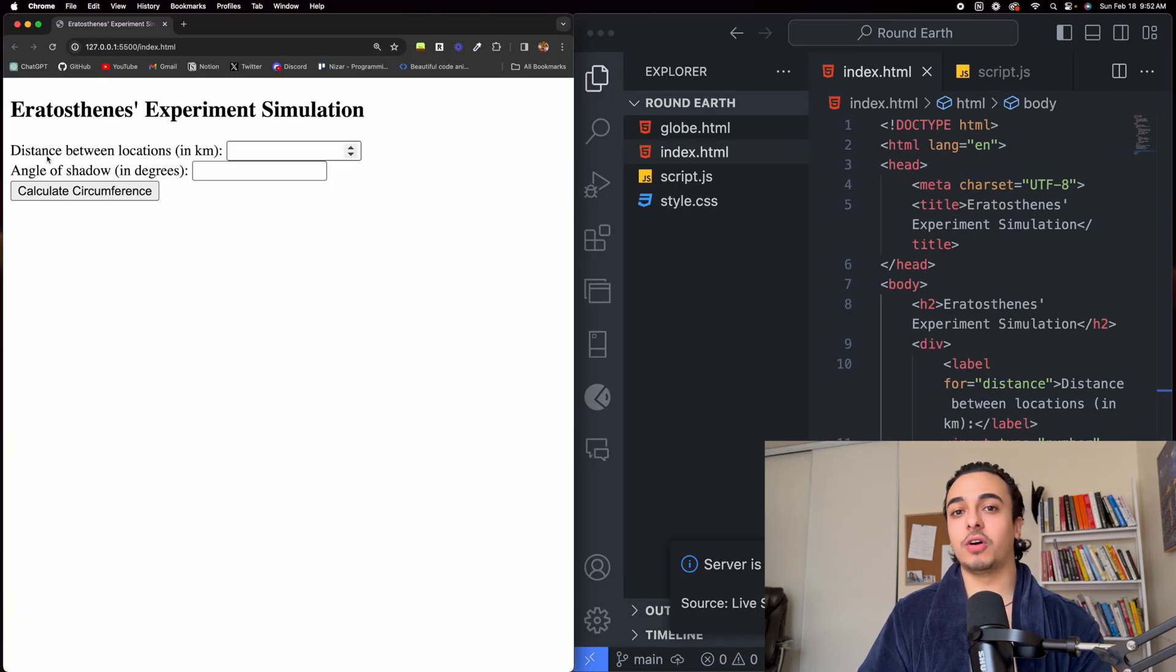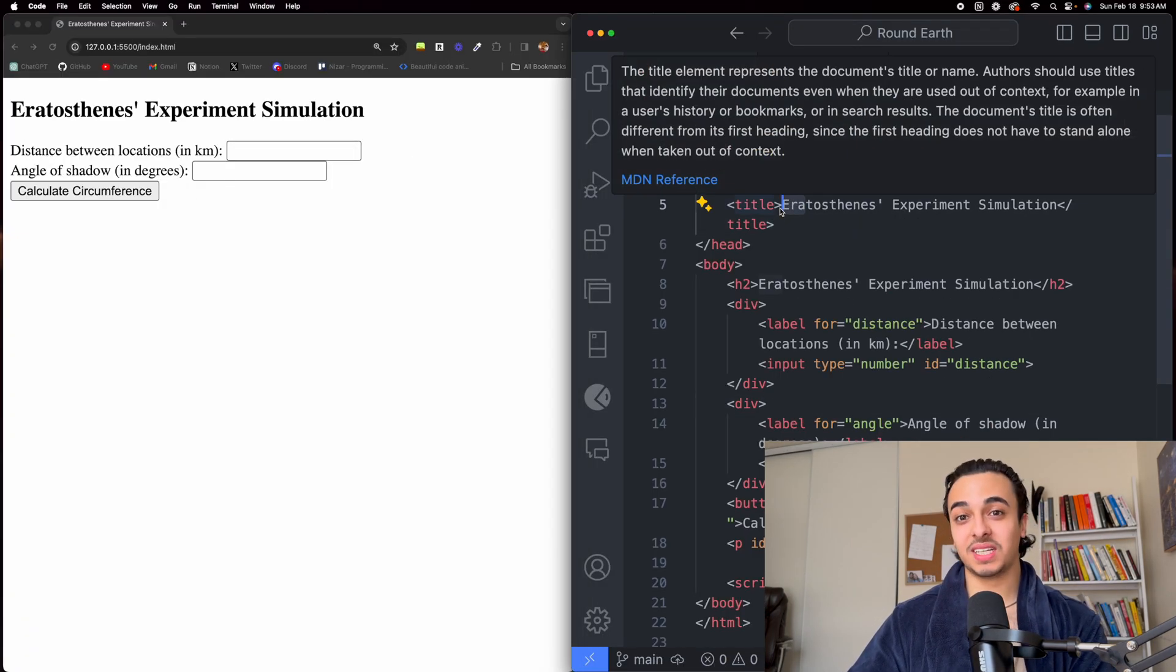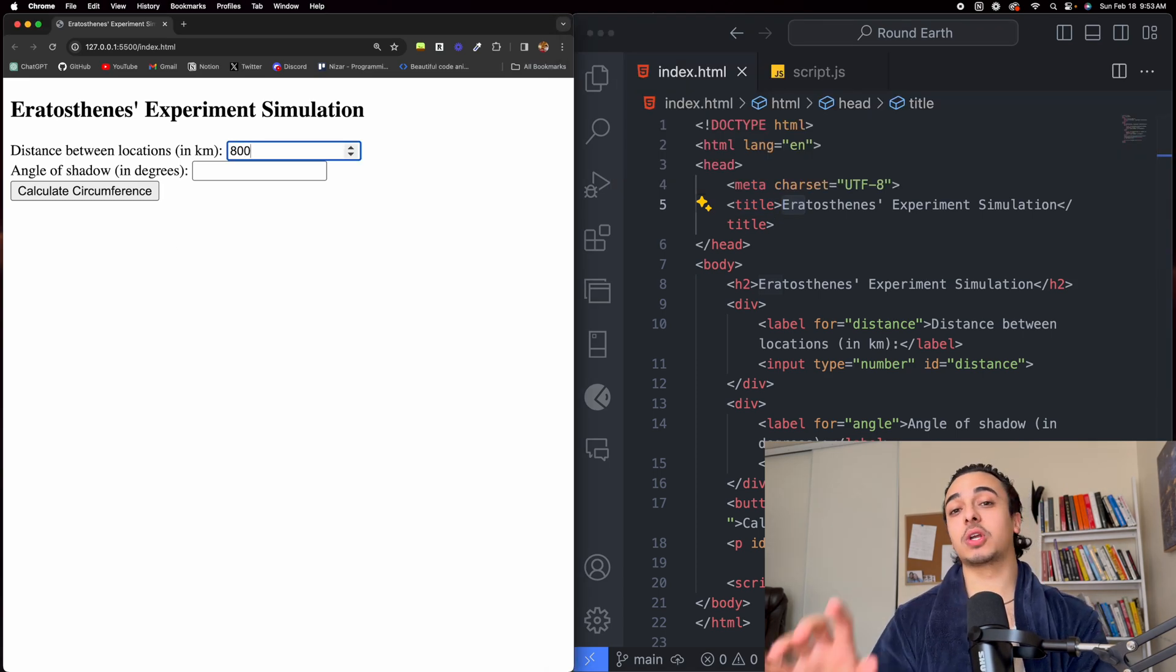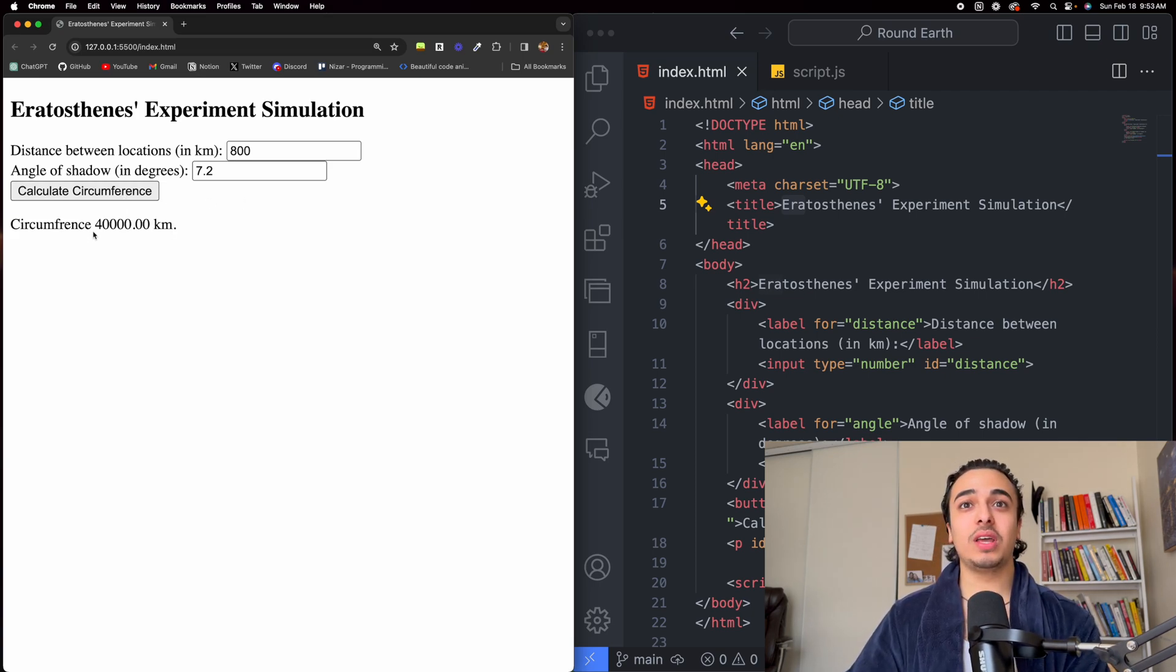And this is the output of our HTML. And we're just going to call him ERA because I don't want to say his name. But in ERA's study, he compared the distance of 800 kilometers between two structures and found that the shadow angle was 7.2. And if you calculate this using our calculation, you will get 40,000 kilometers.